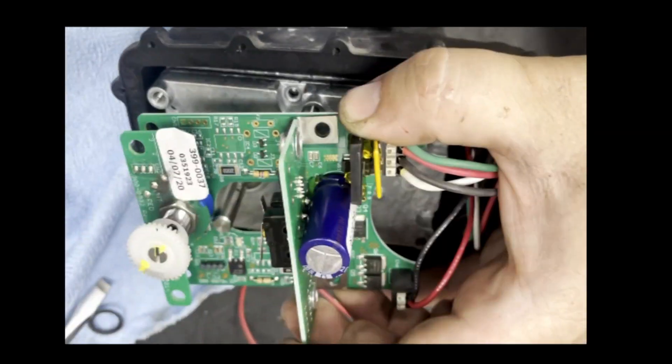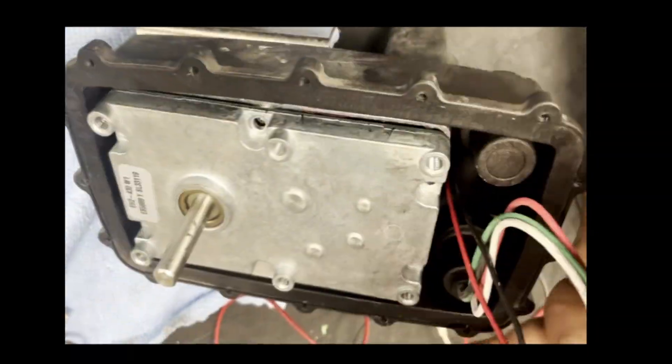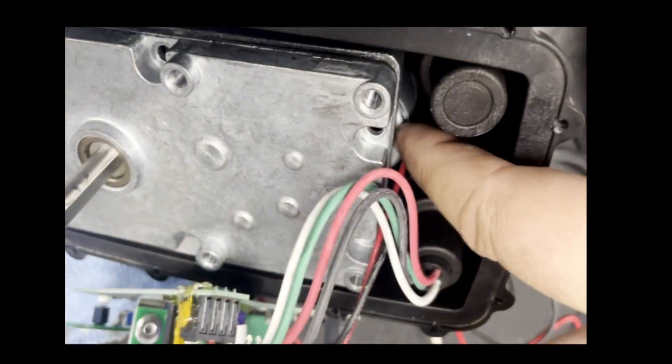Here we have disassembled the actuator, and here we have the drive module. This is what gives the DC motor down below control.